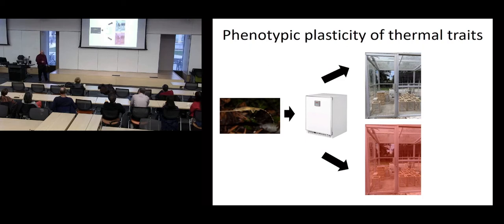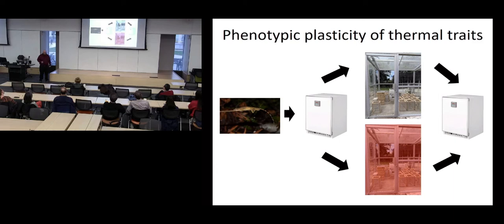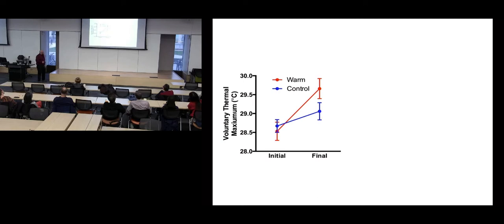We placed lizards into mesocosm glass houses where we could regulate temperature. One glass house was kept at a temperature replicating what we've measured on the mainland. The warm treatment was about two degrees hotter in maximum temperature during the hottest part of the day. Lizards experienced diurnal variation in temperature, making this more realistic but also a little messier. We then re-measured the same traits — including thermal limits and metabolism — after the treatment.